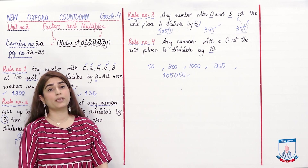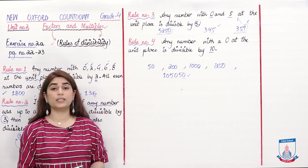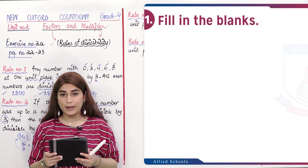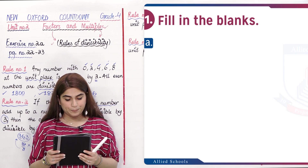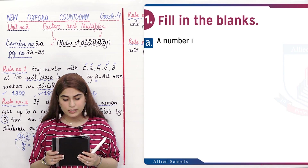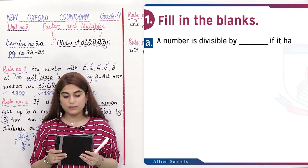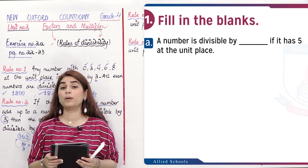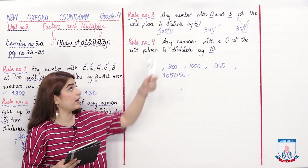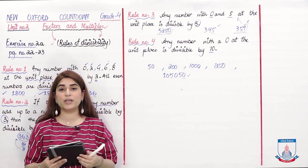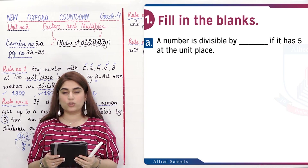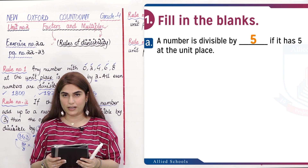Now we are going to start Exercise 2A — Fill in the blanks. Question (a): A number is divisible by dash if it has 5 at the unit place. If any number ends in 5, which means it is divisible by 5. So you can write 5 here.